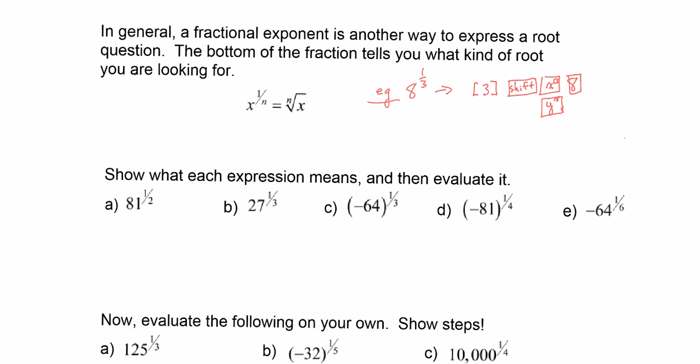When we write x to the 1 over n, we want to show what each expression means. What I expect is: you show what it means, then go and change it into the appropriate answer. If we have x to the 1 over n, we immediately change it to what it means — its radical form — and then give the answer as our final answer using our calculator or our head.